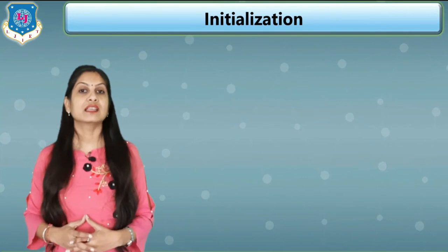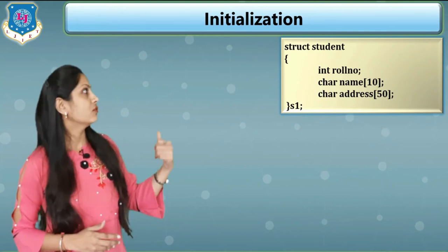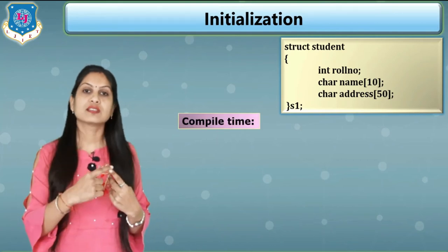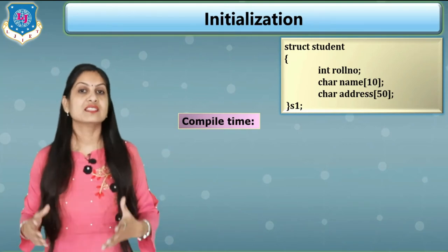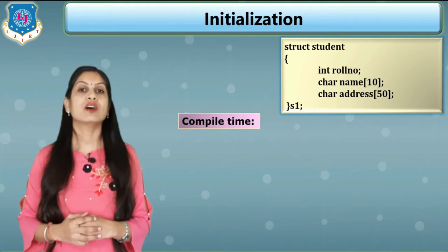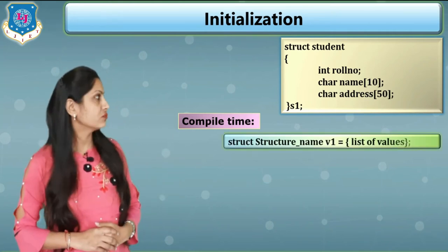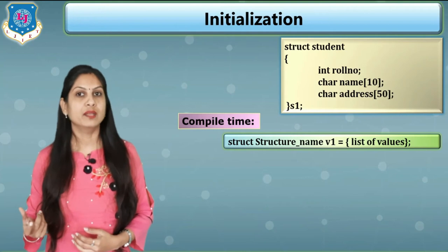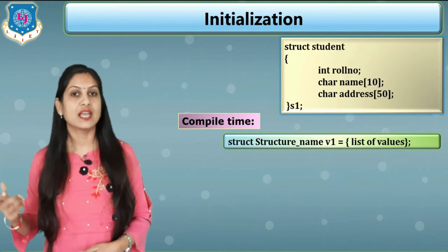Now move to the next part: initialization — how we can assign values to each and every member. There are two different methods for initialization: first is compile time, and second is runtime. In the compile time method, it is a fixed value that we assign using the equals sign. In the runtime method we read the data from the user.